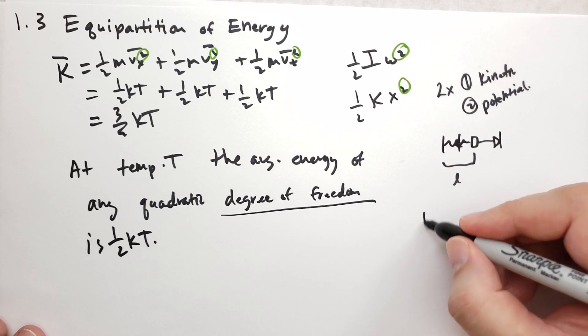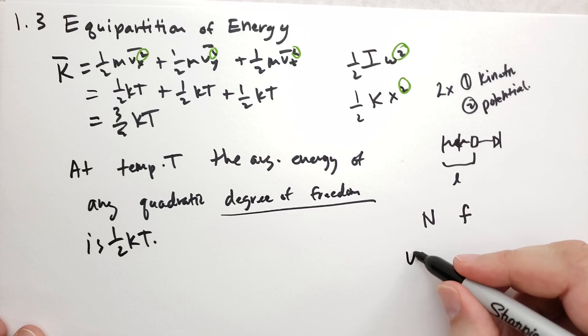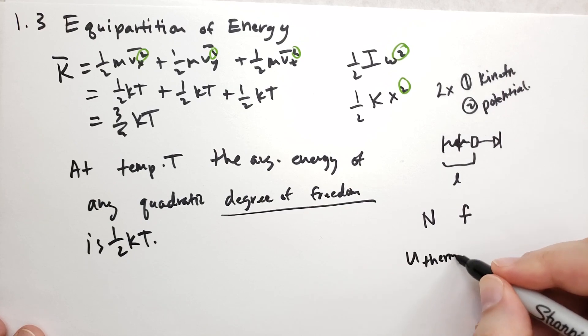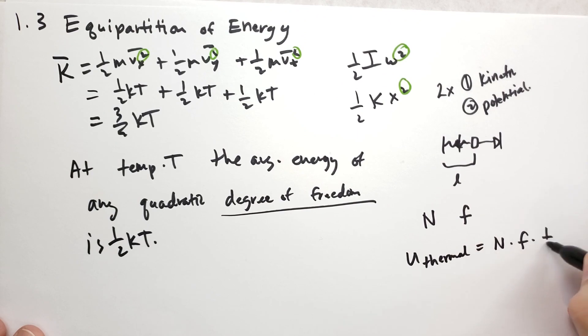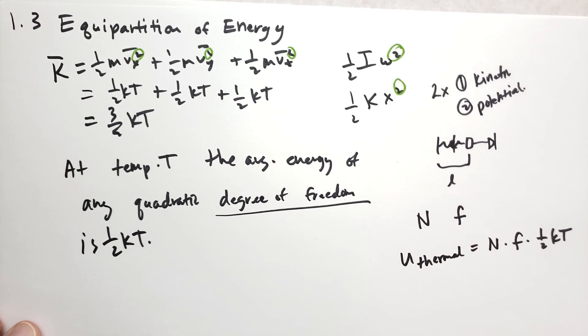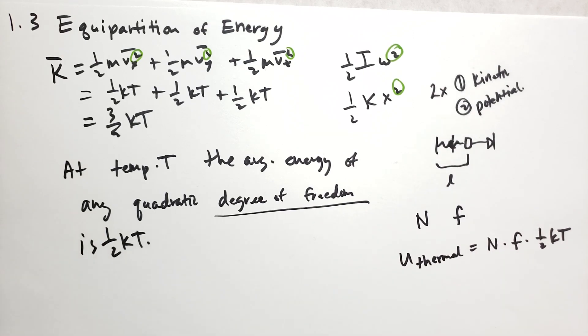When you have a system with n particles and f degrees of freedom for each particle, the total thermal energy is going to be n times f times 1/2 kT. So all of that thermal energy is going to split between each of the particles, each of their degrees of freedom, and they're each going to have 1/2 kT.